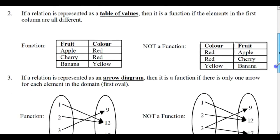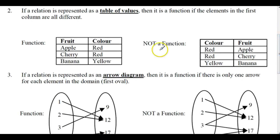If we have a table of values, then it's a function if the elements in the first column are different, apple, cherry, banana. But when we reverse this, we have not a function since red is associated with apple, and red is associated with cherry. So it's okay if the first element has, if two first elements point to the same second element. For example, down here, we'll get there in a sec.